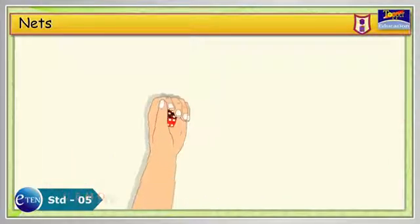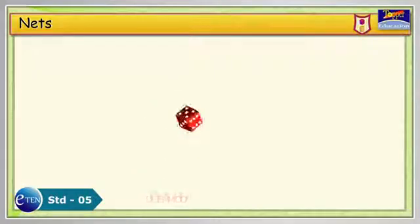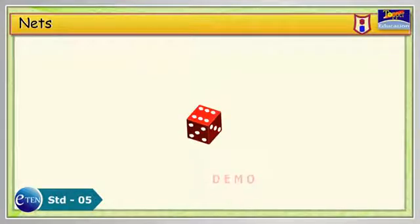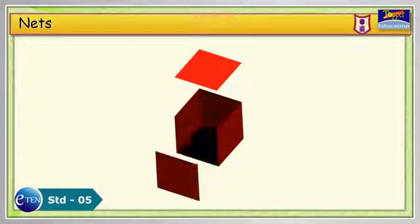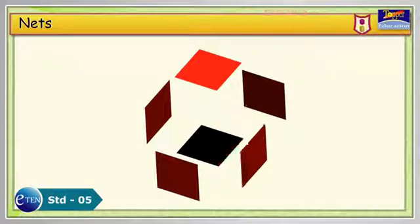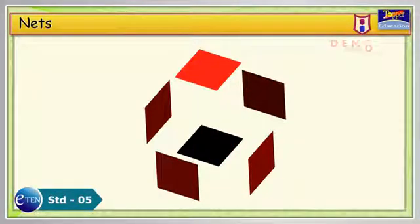Look at this dice. We use it to play many games. In maths, a dice is called a cube. Because the length, breadth and the depth are all same. A cube has six square surfaces and we can see that all the six surfaces of a cube are same.